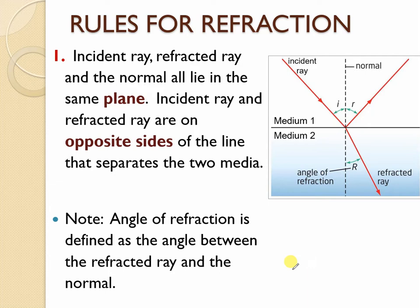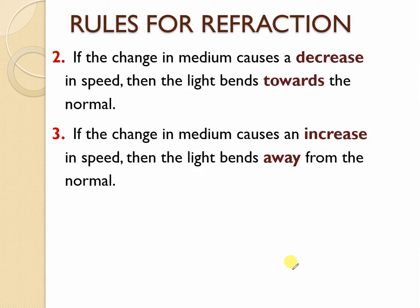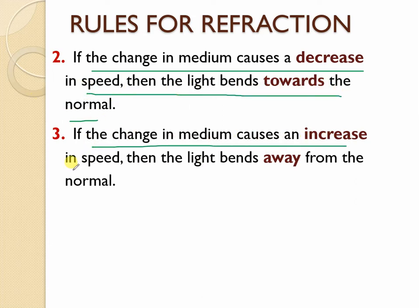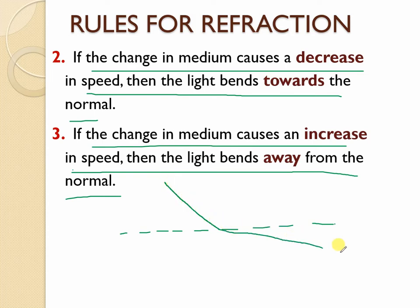There are also a couple of rules we have to consider. If the change in the medium causes a decrease in speed, the light bends toward the normal. If the change in medium causes an increase in speed, so going from a substance probably into air, then the light is going to bend away from the normal. If you've got a ray coming from water and then going into the air it's going to bend like that, it's going to speed up. If you had it from the air going into water it's going to slow down and bend in that direction there.